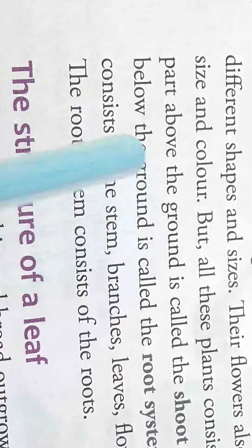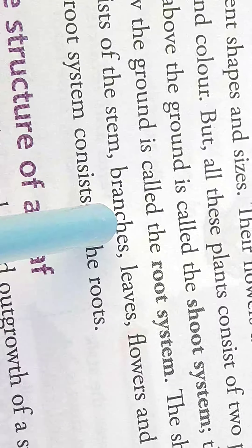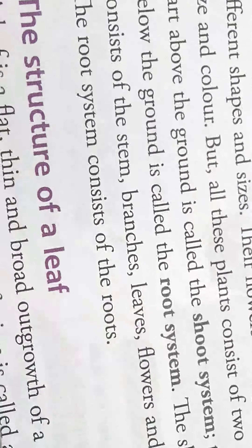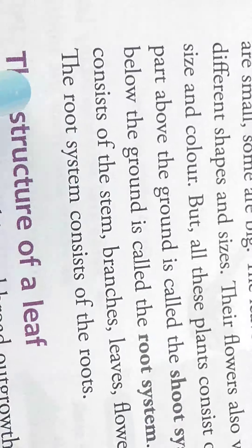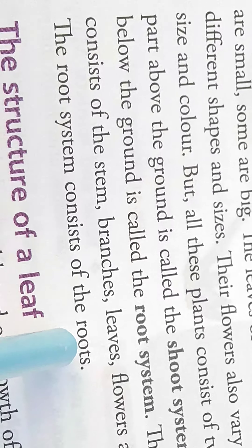The shoot system consists of stem, branches, leaves, flowers and fruits. And the root system consists of only roots.